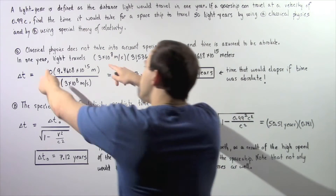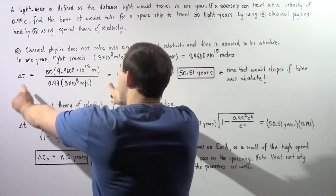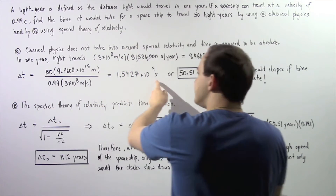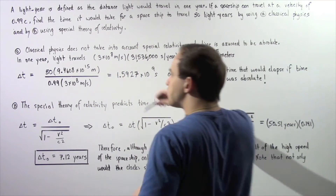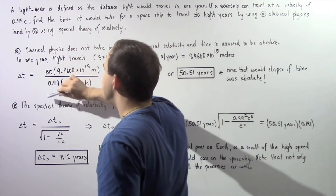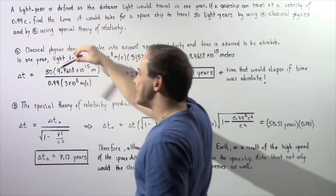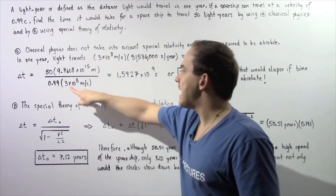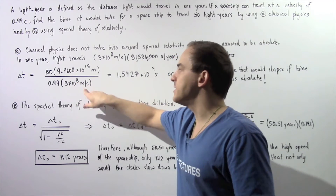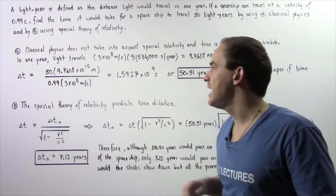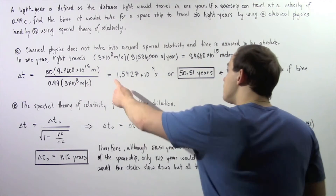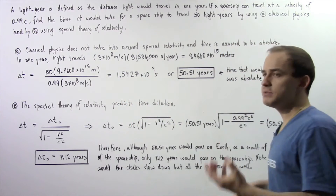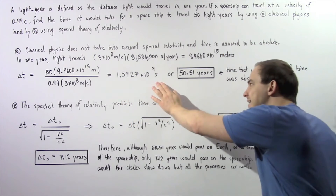We then divide that total distance by the speed of the spaceship to get the travel time in seconds. The spaceship travels at 0.99 times the speed of light, 3×10⁸ meters per second, giving us approximately 1.5927×10⁹ seconds.